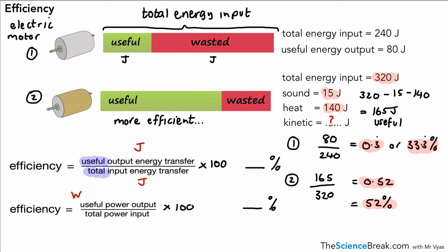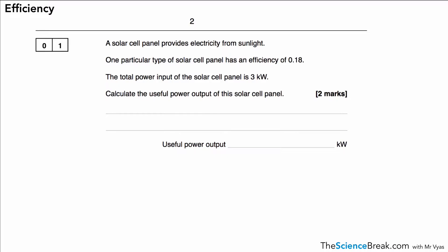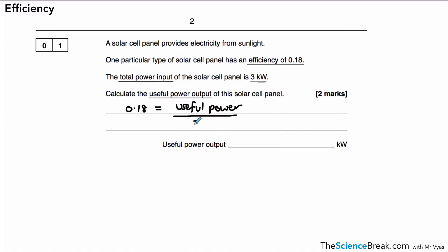What might this look like in an exam question? Here's an example involving a solar cell panel which provides electricity from sunlight. The efficiency is given as 0.18, and the total power input is 3 kilowatts. We want to calculate the useful power output. Using the power-based efficiency equation: 0.18 equals useful power output divided by 3. Rearranging gives 0.18 times 3, which equals 0.54 kilowatts — and that's how you'd get the two marks.